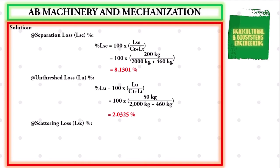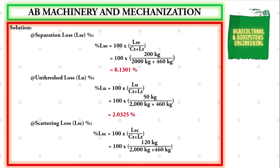The next value is the scattering loss in percentage. The formula is: 100 multiplied by the quotient of scattering loss in kilograms over the sum of the clean threshed grain added to the total loss, both in kilograms. Substituting: 100 × 120 kg / (2000 kg + 460 kg), giving a final value of 4.8780%.